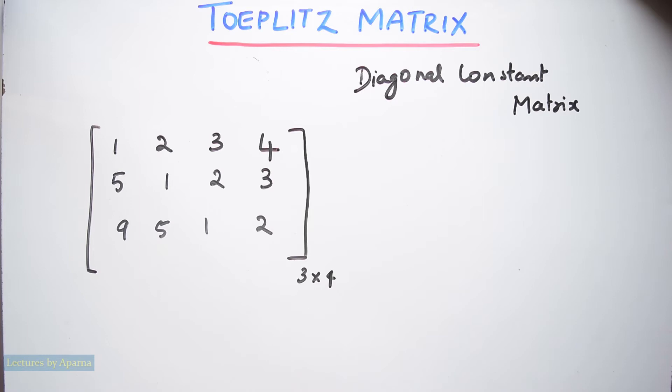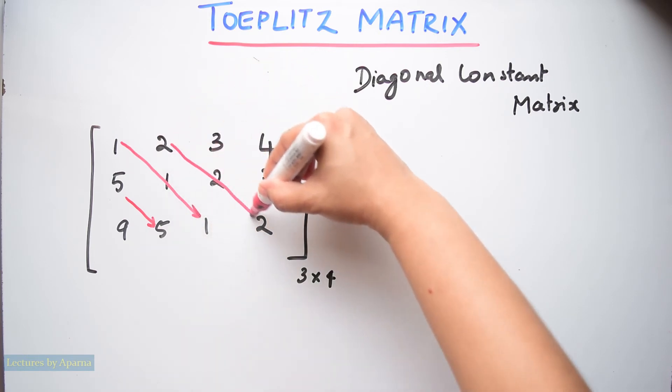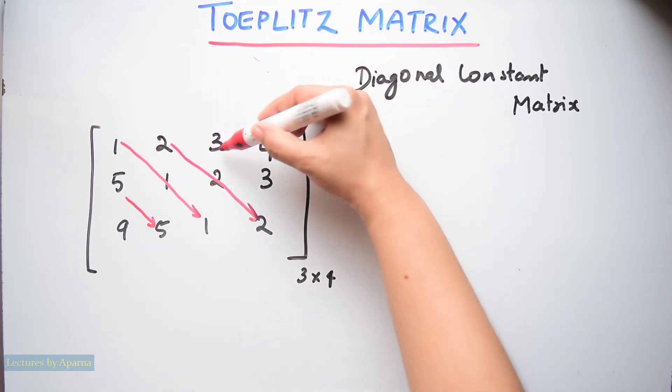Descending diagonal from left to right is this one. This is another descending diagonal from left to right. This is another descending diagonal from left to right and this is another descending diagonal from left to right.